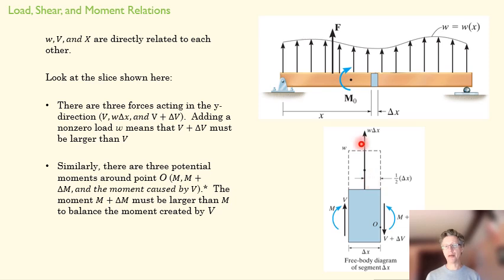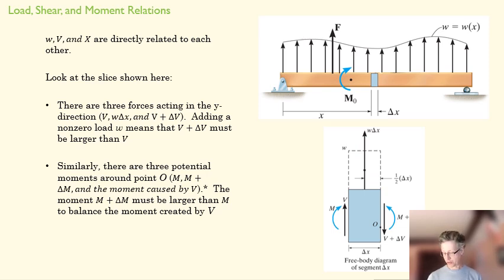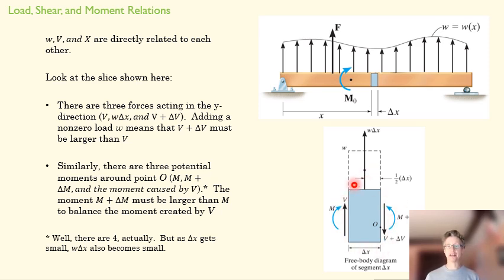You might ask about the moment created by the distributed load term. As delta x gets smaller and smaller, m and v stay the same, but w·Δx disappears — it ultimately becomes a very, very small moment that we can neglect. So the big point from this differential analysis is that the change in shear is related to how much load is being applied.